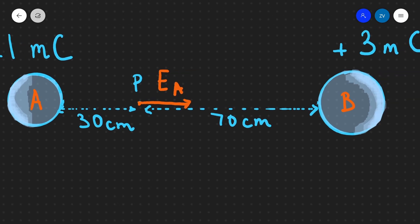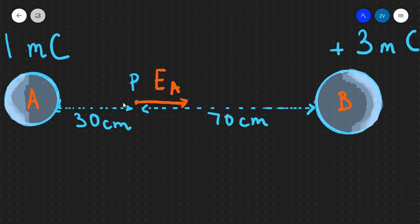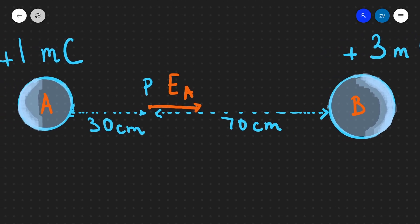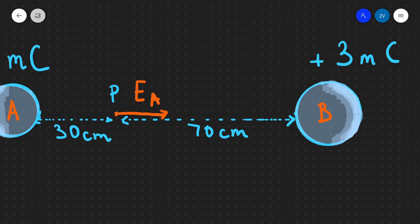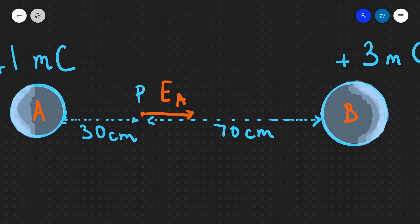The other electric field will also be pointing radially outwards, so this is going to be pointing to the left. Because I'm not really sure about the sizes of those fields since we haven't calculated them yet, the size of the arrows at this point is just a guess. So let's draw the other electric field, which will be radiating outwards as well — so it's going to be to the left. Let's draw it with a solid line rather than a dotted line, like this, and this over here is point P.